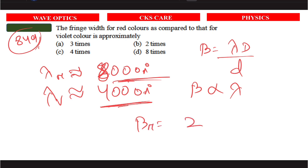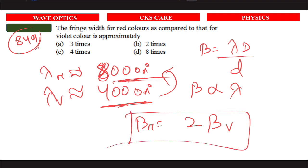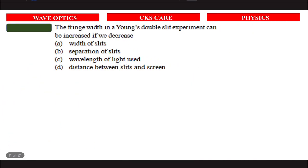The wavelength of red is approximately twice that of violet color, so the fringe width of red color as compared to that of violet is approximately two times. Two times is the right answer.